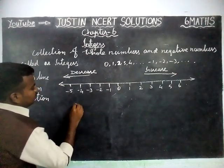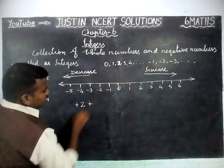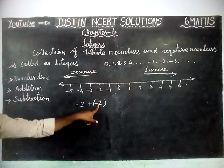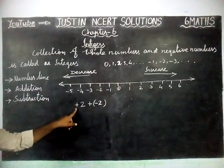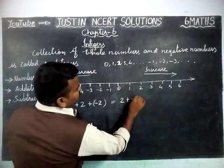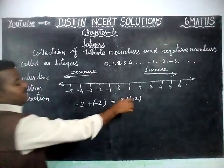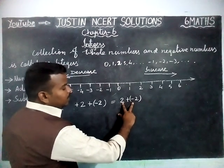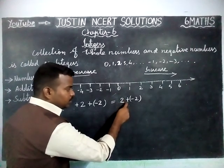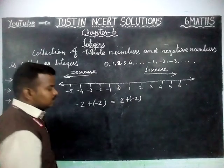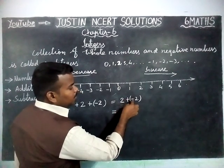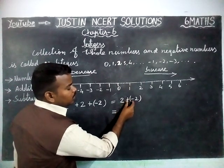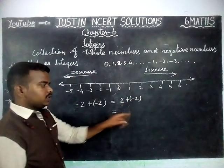We are going to add two numbers. For example, plus 2 plus minus 2. For positive numbers, no need to write the sign separately. So we write: 2 plus minus 2. When adding two different signs, we have to find the difference. Another trick: when two symbols come nearby without any number in between — like plus and minus — we have to multiply those two signs.